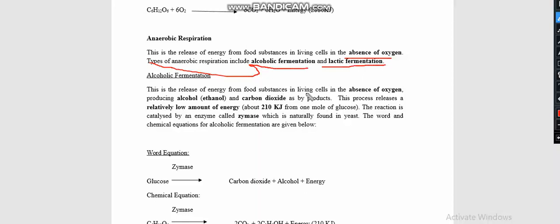Alcoholic fermentation is the release of energy from food substances in living cells in the absence of oxygen, producing alcohol. It produces ethanol and carbon dioxide, and produces a very low amount of energy.